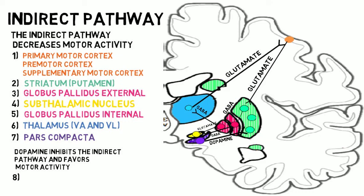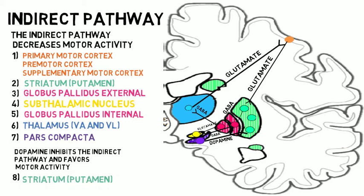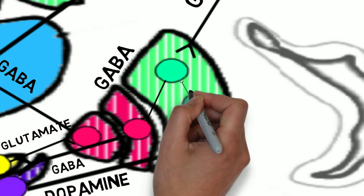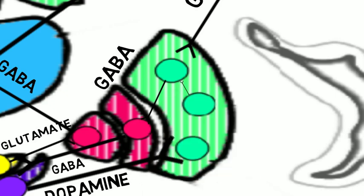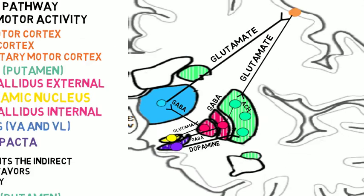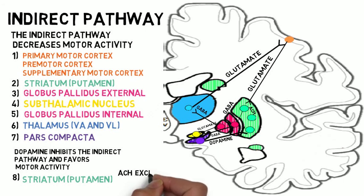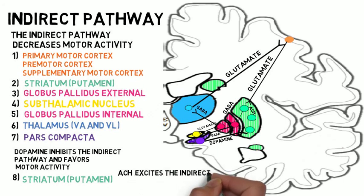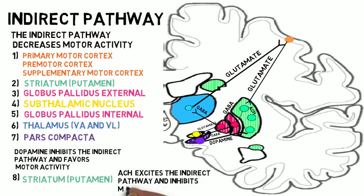The striatum also contains acetylcholine-secreting interneurons that synapse on GABAergic neurons. Excitation of these cholinergic neurons excites the indirect pathway and reduces motor activity. Collectively, the indirect and direct pathways function to modulate motor movements. Therefore, their dysregulation is the hallmark of several important pathological conditions, including Parkinson's disease.